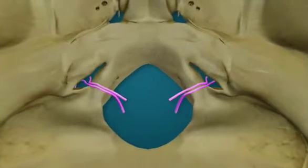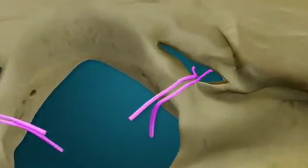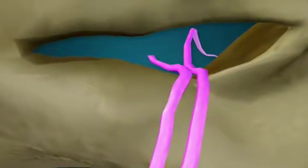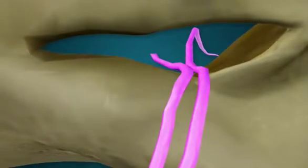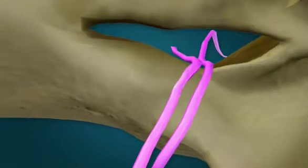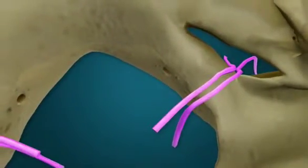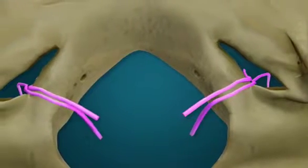They unite and traverse the foramen magnum to enter the posterior cranial fossa. These fibers go through the jugular foramen to enter the posterior triangle of the neck and innervate the sternocleidomastoid and trapezius muscles.